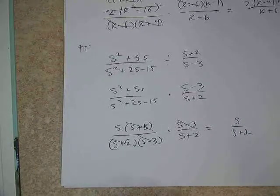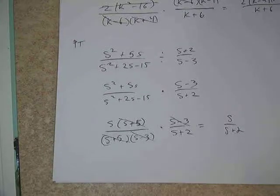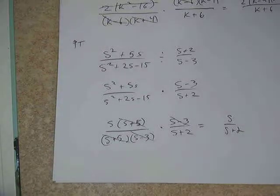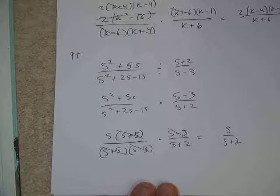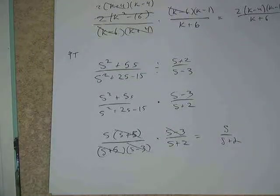And so we can see, cross out-wise, we've got an s plus 5 and an s plus 5. Those could go. We've got an s minus 3 and an s minus 3. Those could go. And then ultimately the only thing we have left on top is an s. And on the bottom we have an s plus 2. And again, what's going to happen if we cross these s's out? We're going to get it wrong every time. So do not cross out those s's.